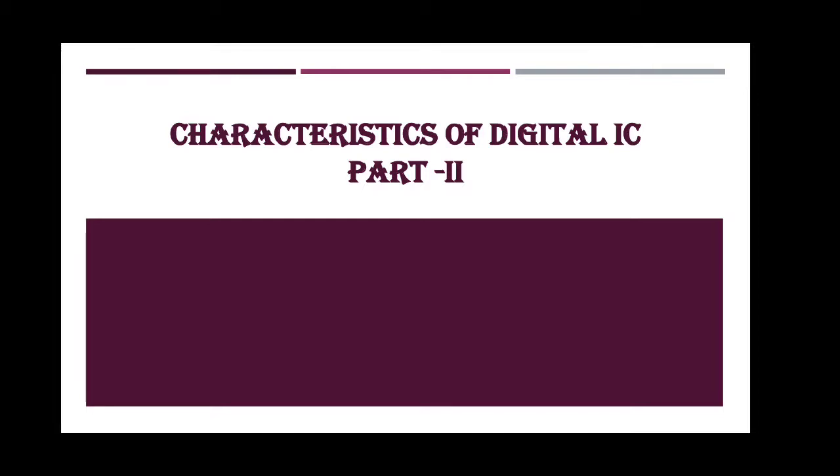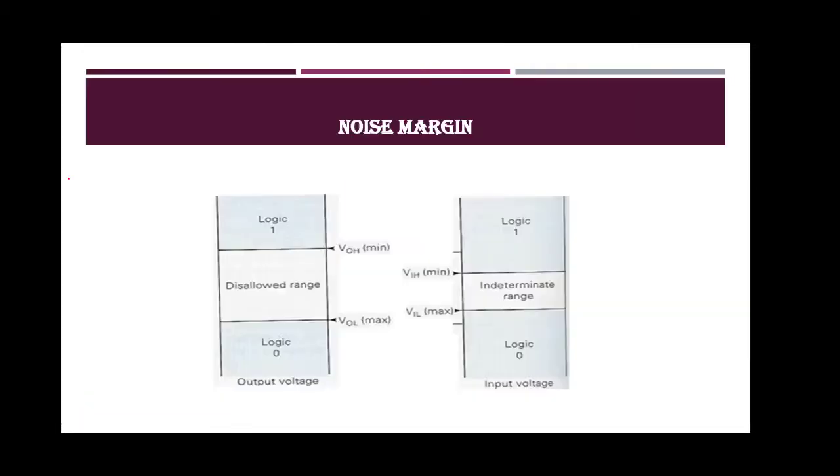The parameters which are left are: first is fan out, noise margin, then operating temperature range, and the last one is voltage and current parameters. The first parameter today we will discuss is noise margin.